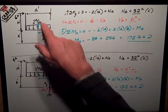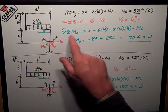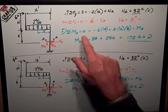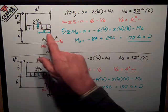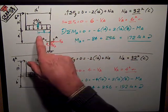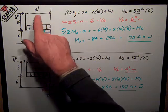Plus, because it's counter-clockwise in accordance with my sign assumption, two times sixteen, thirty-two kips, times the moment arm of eight feet, half of that sixteen feet.